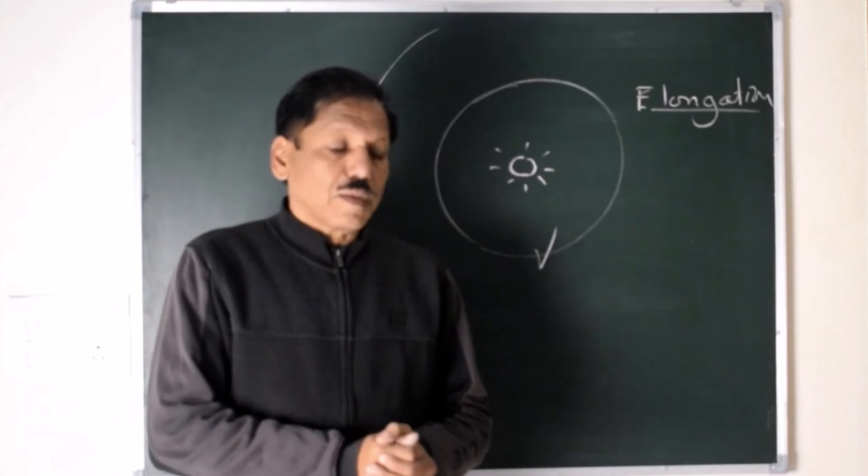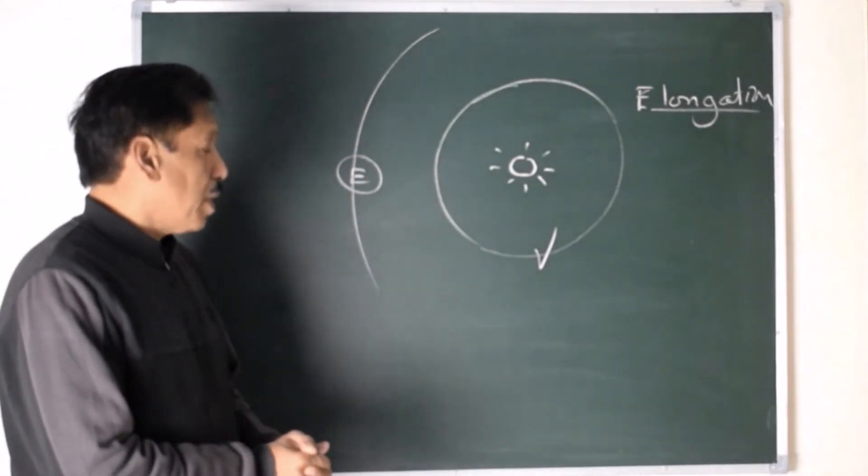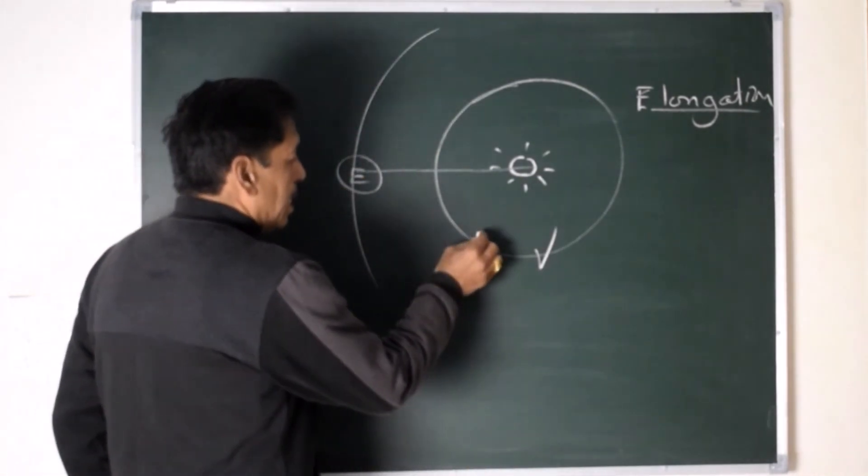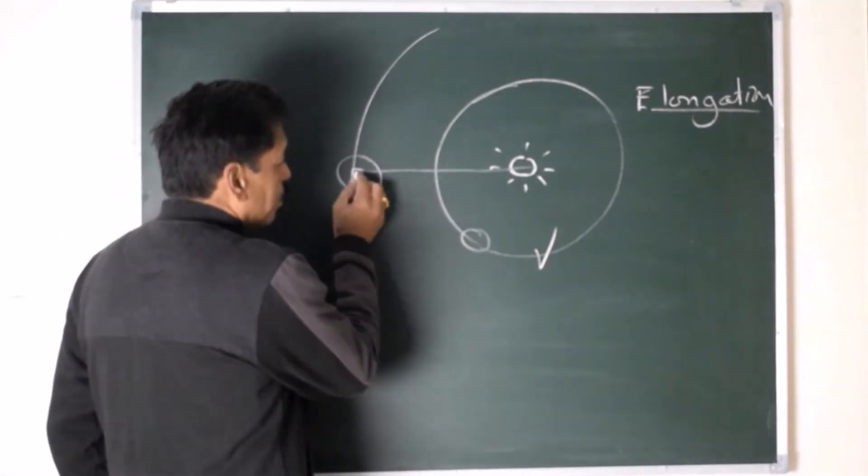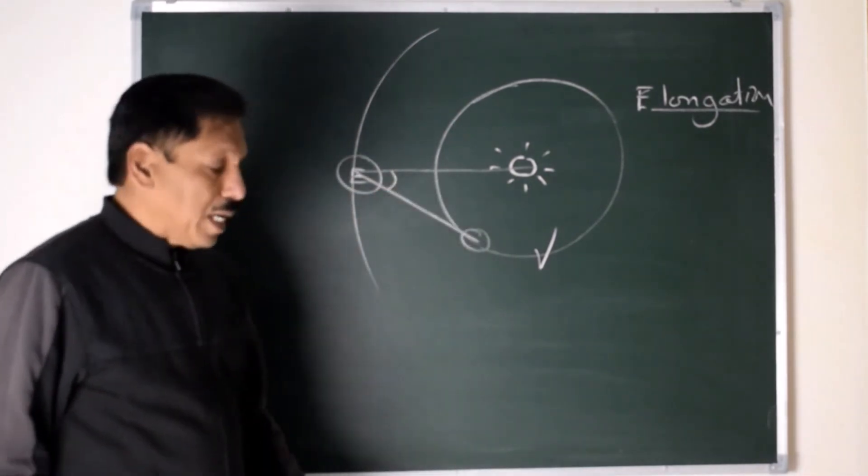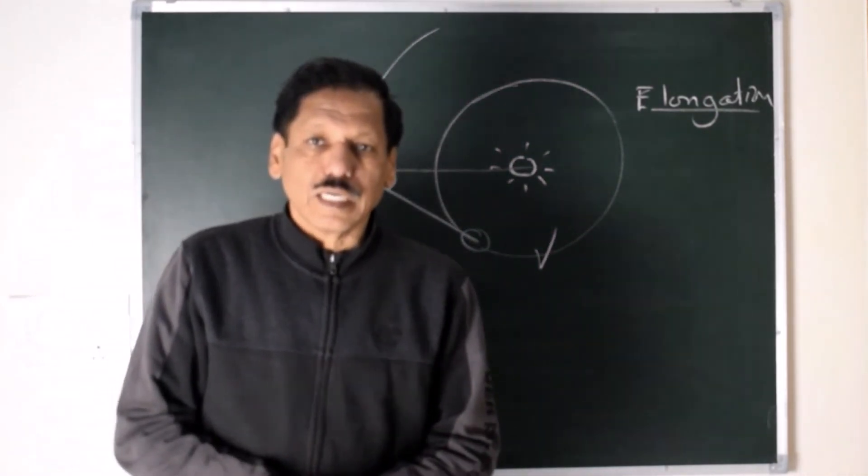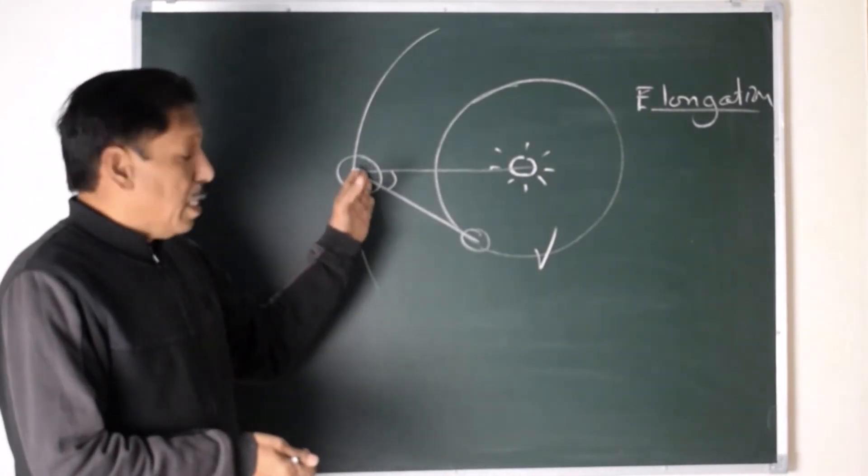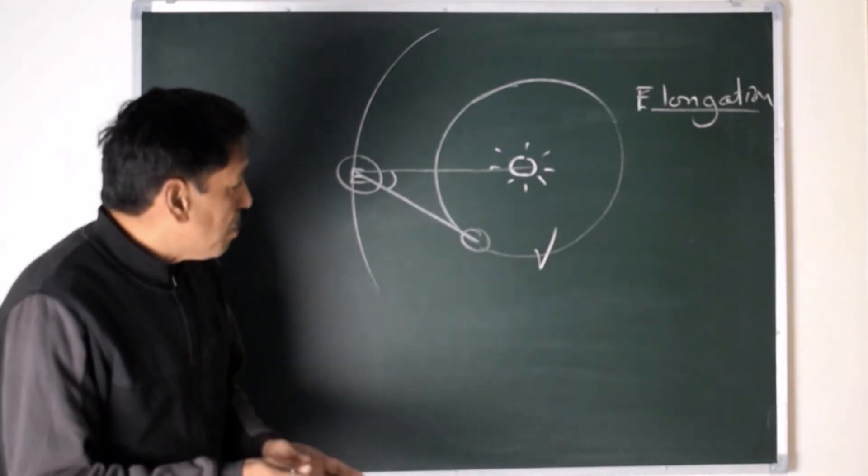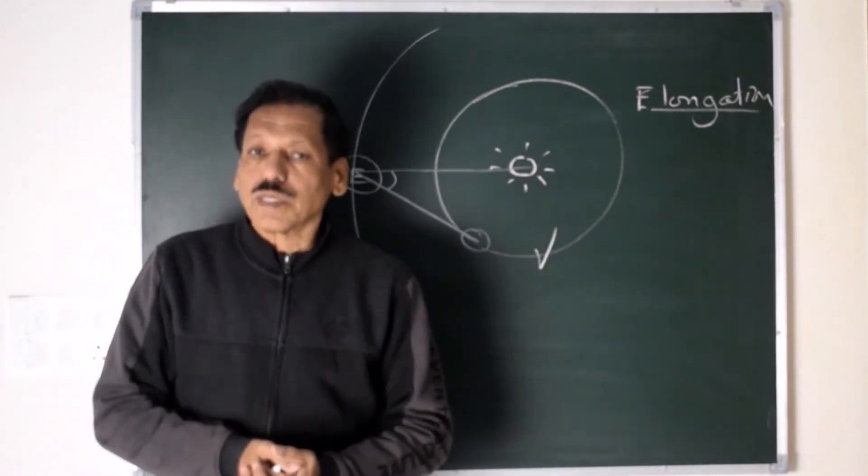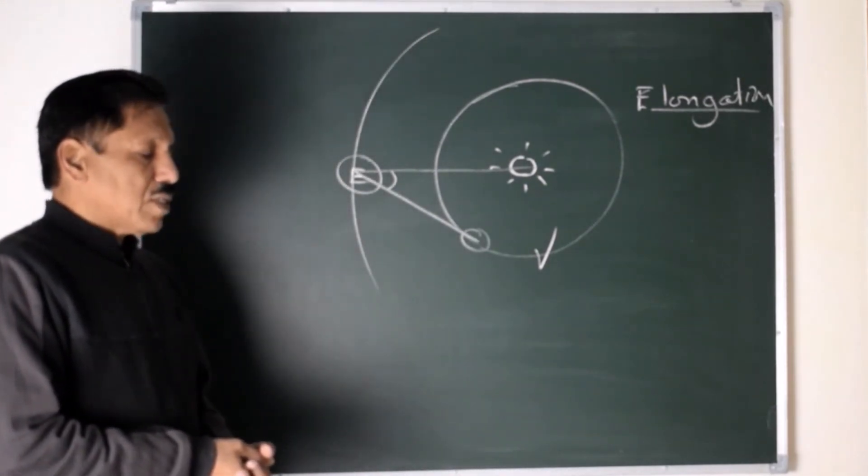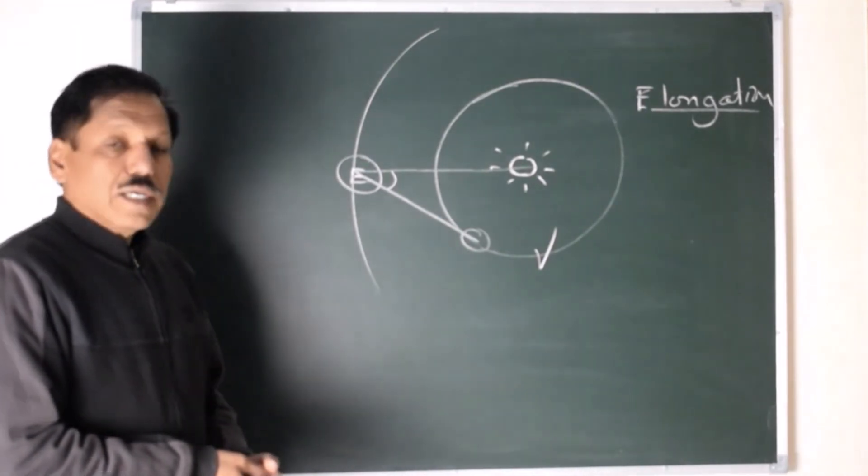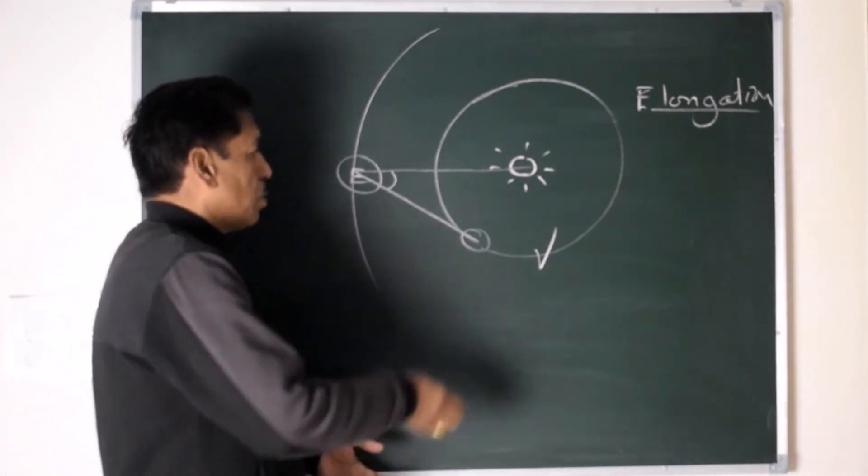Elongation is the angle subtended at the center of the Earth between the directions of the Sun and any heavenly body, say Venus. Here is the elongation, but my definition won't be correct unless I say this angle is measured in the plane of ecliptic. So elongation is the angle at the center of the Earth measured between the directions of the center of the Sun and the heavenly body, measured east or west of the Sun, but must mention in the plane of ecliptic. So this is the elongation.